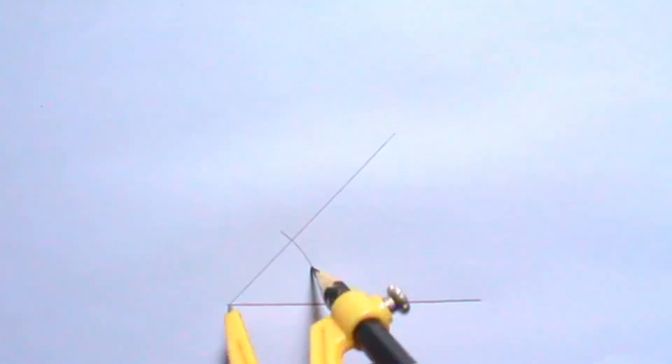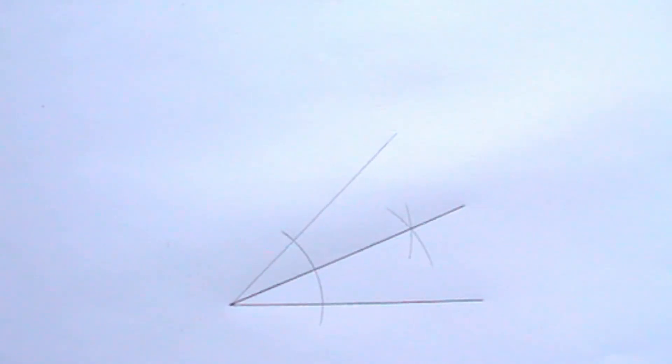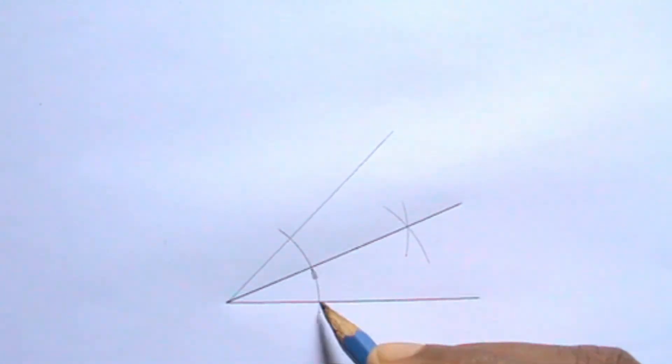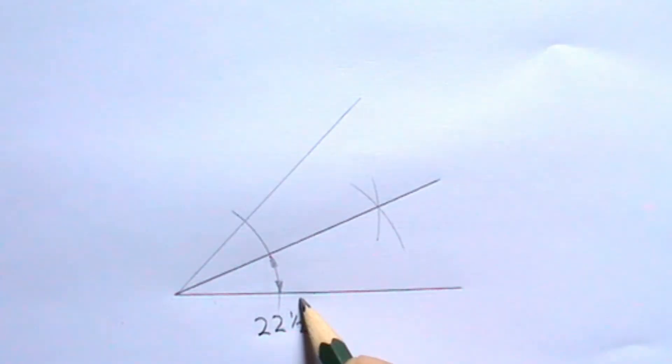Next, I will draw an arc placing my compass at the point where the lines intersect. I will bisect the angle formed by the two lines. I will indicate the angle I obtained. I have successfully constructed angle 22 and a half using my 45 degree set square as my basic.